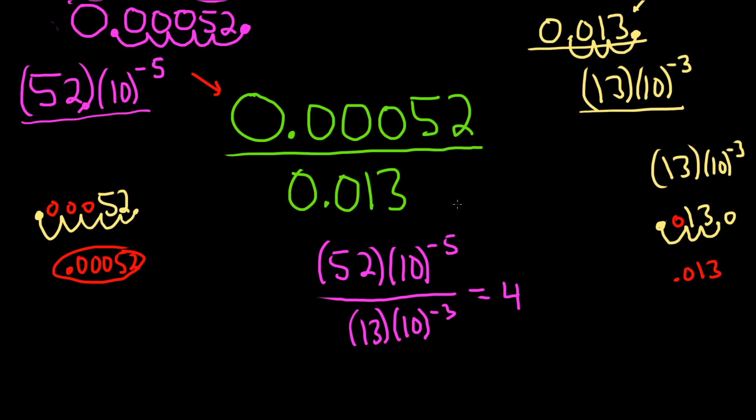And then here what you can do is just subtract the exponents because the bases are the same. So we have 10, and it'll be negative 5 minus negative 3. That's the rule for exponents, you subtract. So this is 4 times 10, and then it's really negative 5 plus 3, so it's negative 2.